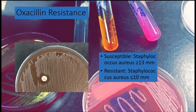Next we have oxacillin resistance testing, which is used to differentiate methicillin-resistant Staphylococcus aureus (MRSA) from regular Staph aureus. There are susceptible and resistant ranges. As you can see in the image, the oxacillin is preventing the MRSA from growing — this is a classic case of antibiotic resistance.